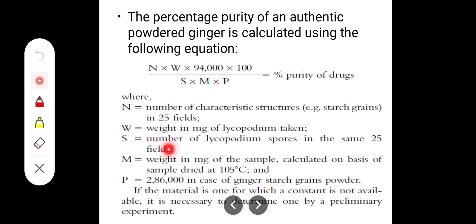S is the number of Lycopodium spores in the same 25 fields. In the 25 fields, we count the number of starch and also the number of Lycopodium spores. M is the weight of the sample like ginger that we take.